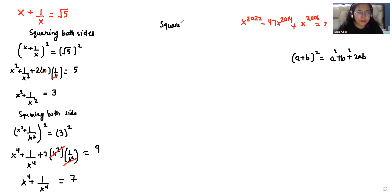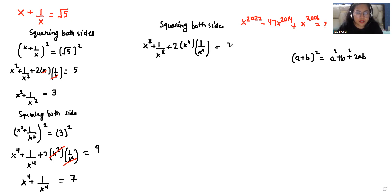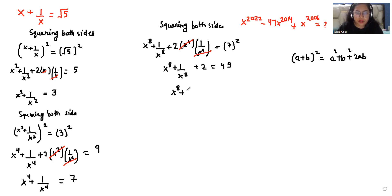Again I am squaring both sides and using the same identity. So x power 8 plus 1 over x power 8 plus 2 times x power 4 times 1 over x power 4 equals 7 square. We can eliminate the middle term, giving x power 8 plus 1 over x power 8 plus 2 equals 49. Taking 2 to the other side, 49 minus 2 is 47. So x power 8 plus 1 over x power 8 equals 47.